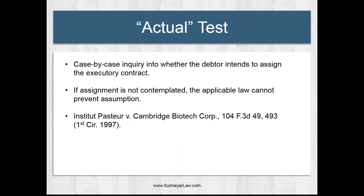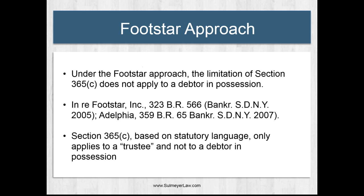The second approach is the actual test, followed by a minority of circuit courts of appeal. Under the actual test, the court conducts a case-by-case inquiry into whether the debtor in the particular case actually intends to assign the executory contract. If assignment is not contemplated, the applicable non-bankruptcy law is not taken into consideration and would not prevent assumption. The actual test has been followed by the First and Fifth Circuits — under this test, the right to assign is restricted but not the right to assume. Notably, the majority of lower courts in reported decisions have taken the view that the actual test should be applied in order to permit assumption where the debtor in possession does not intend to assign the contract.